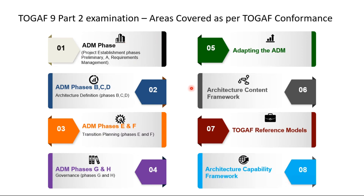In the TOGAF Level 2 exam, whatever you have learned in Level 1 — for example the ADM phases in the four sections — you need to apply those. You will be applying them by adapting the ADM, by implementing the architecture content framework, which will be a reference to your ADM.